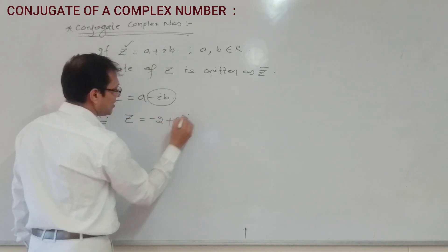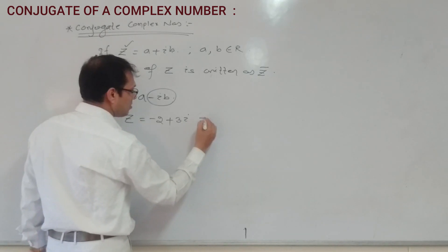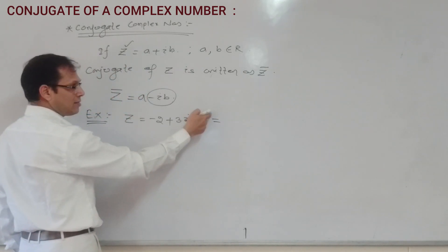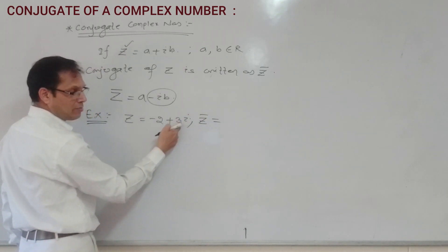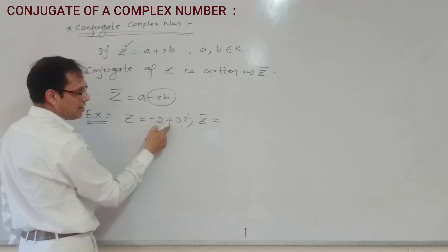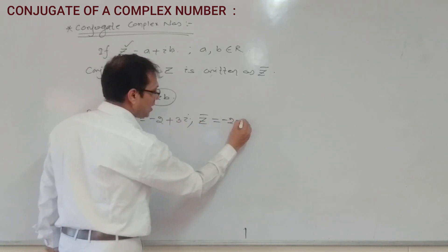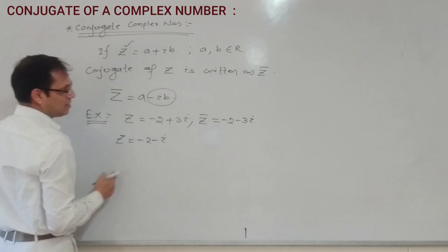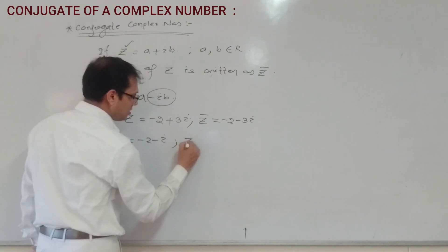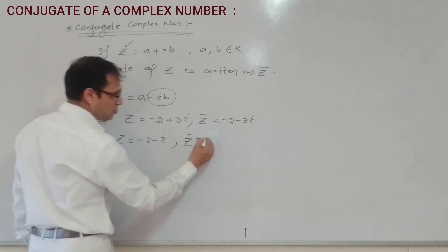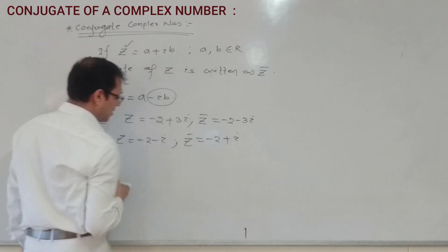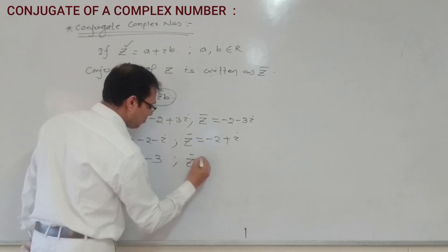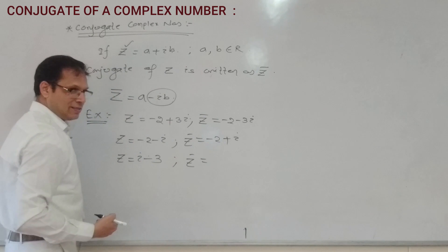So Z bar means conjugate of Z is equal to a minus iB. For example, if Z is equal to minus 2 plus 3i, then Z bar is equal to minus 2 minus 3i.